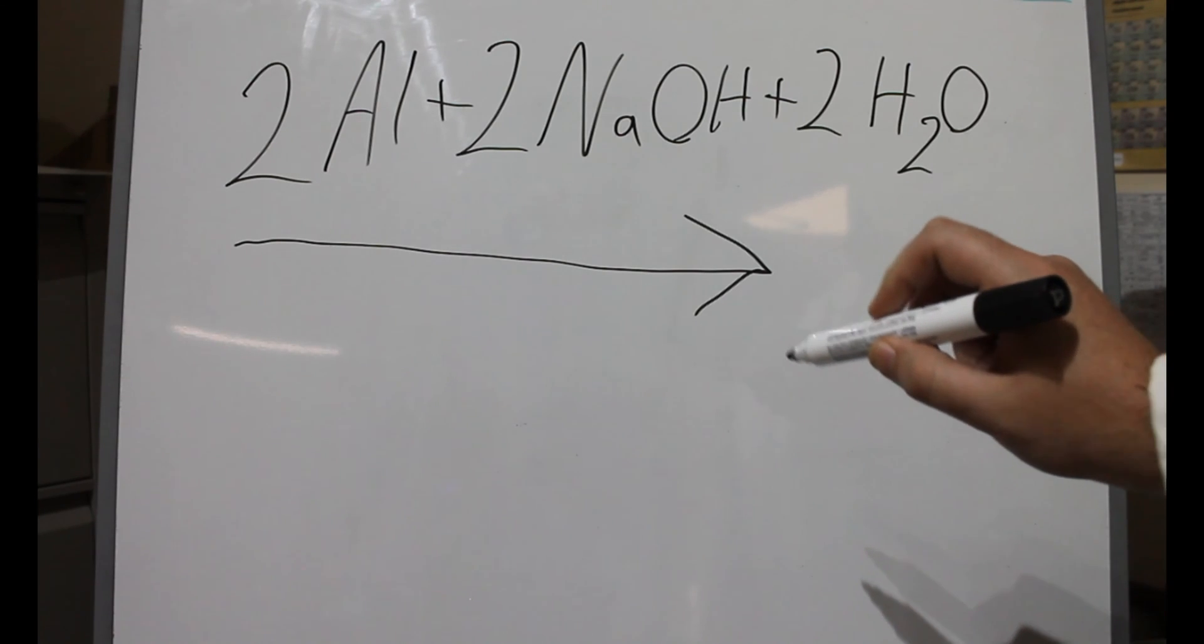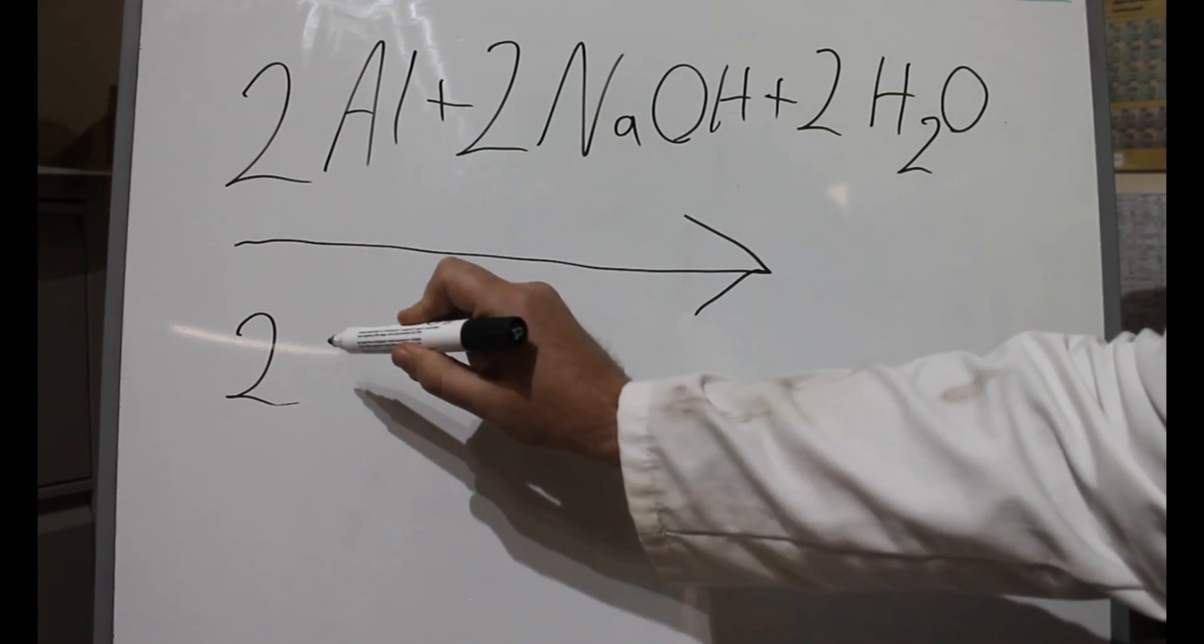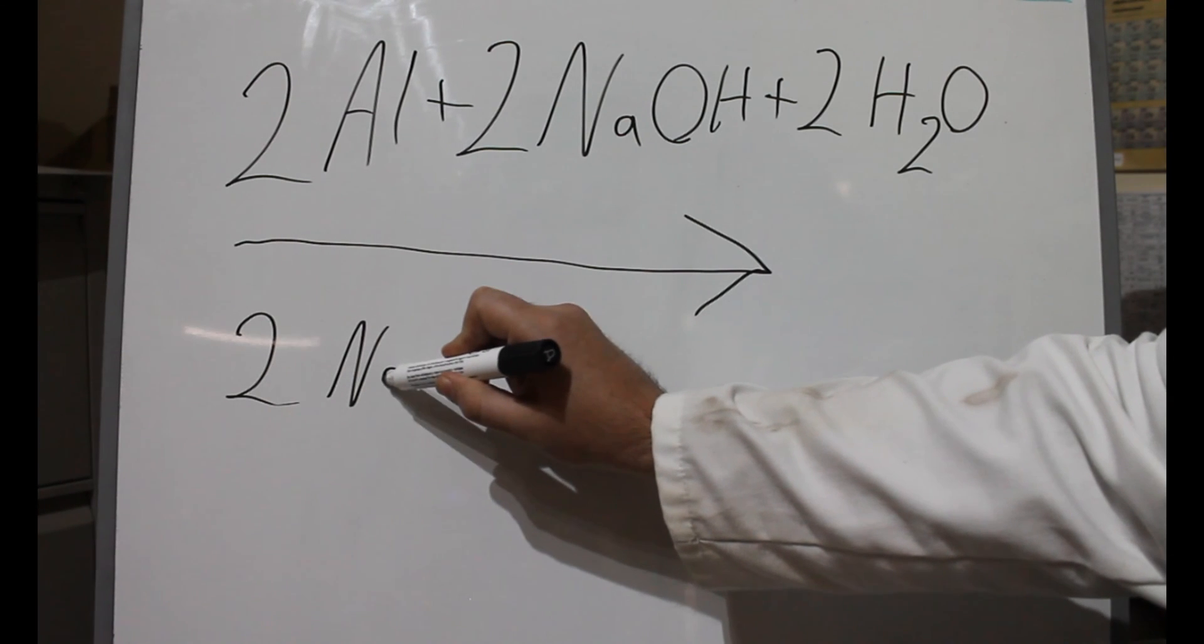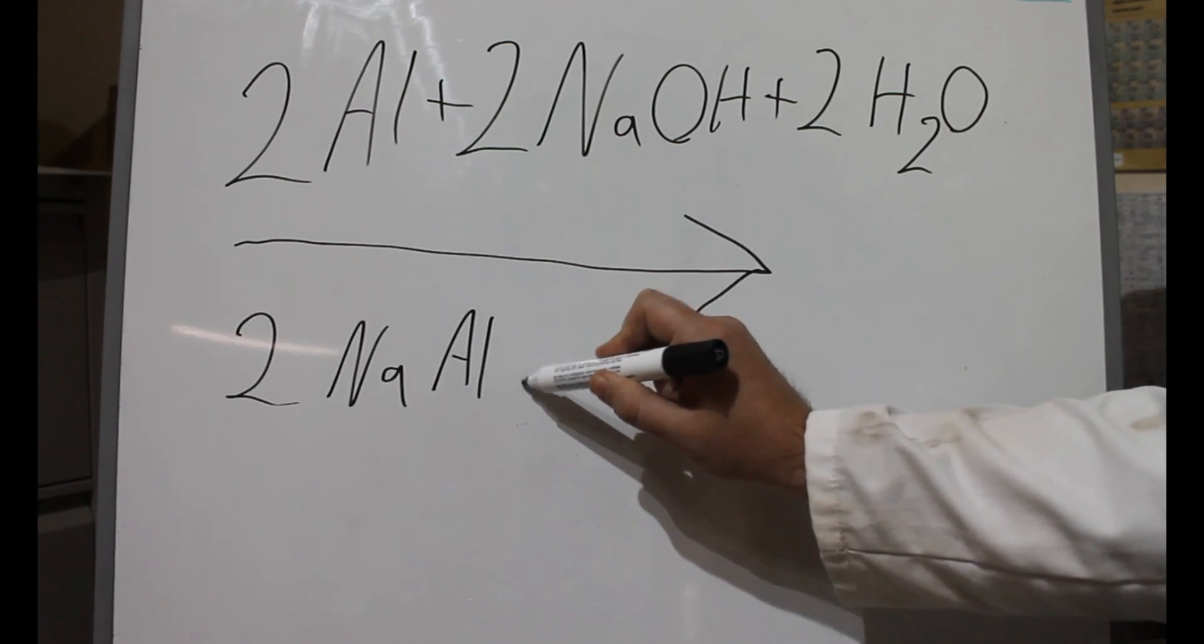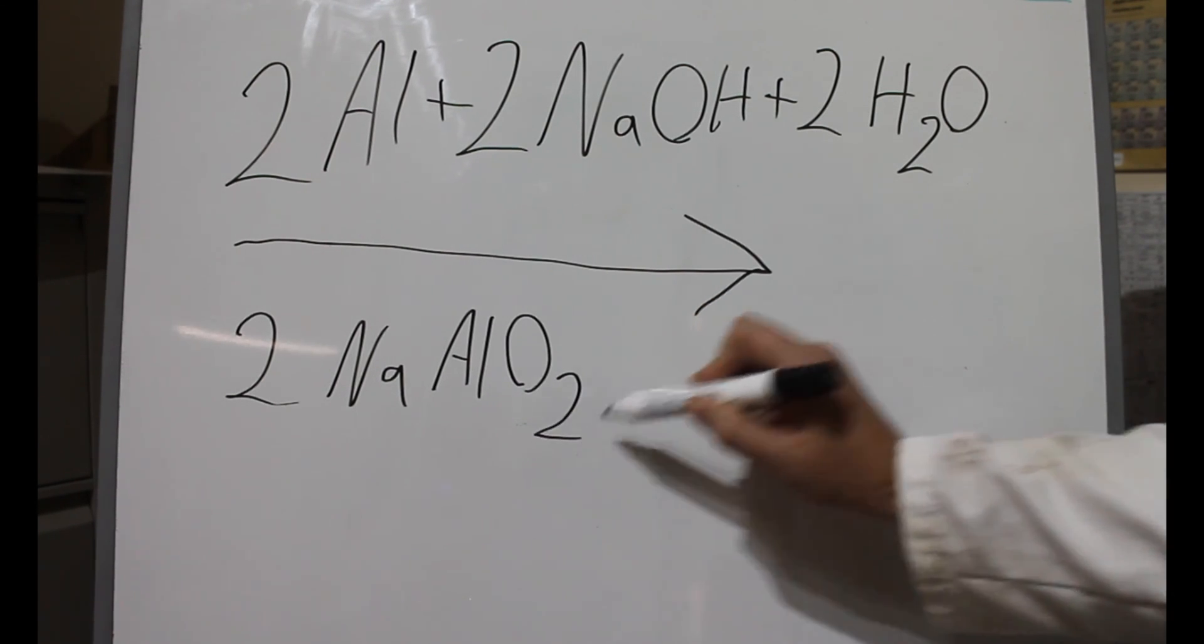These compounds are then being converted into sodium aluminate and hydrogen gas. That hydrogen gas is what gave us an explosive element to our demonstration.